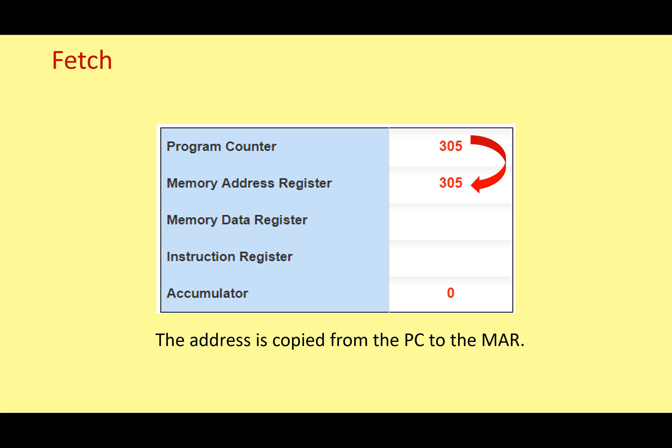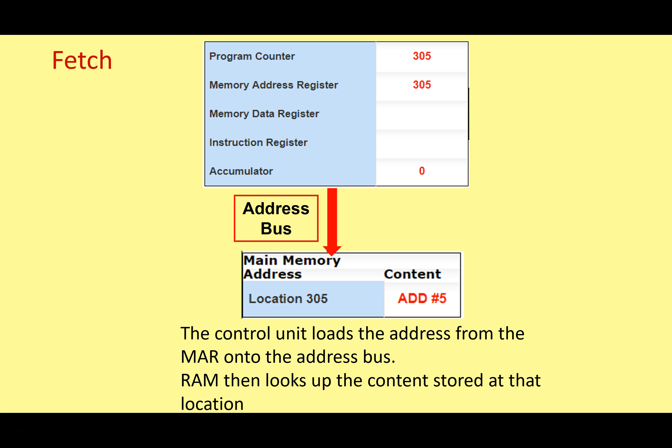This address is then copied from the program counter into the memory address register. The control unit can then load this address from the memory address register onto the address bus. There is a read signal, and that gets transferred onto the address bus. We can then go to our RAM — our main memory — and locate location 305 in main memory.